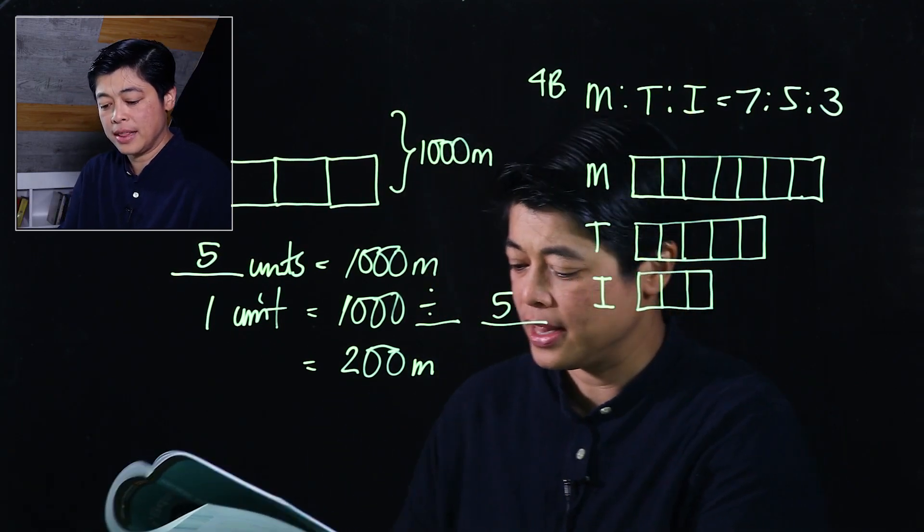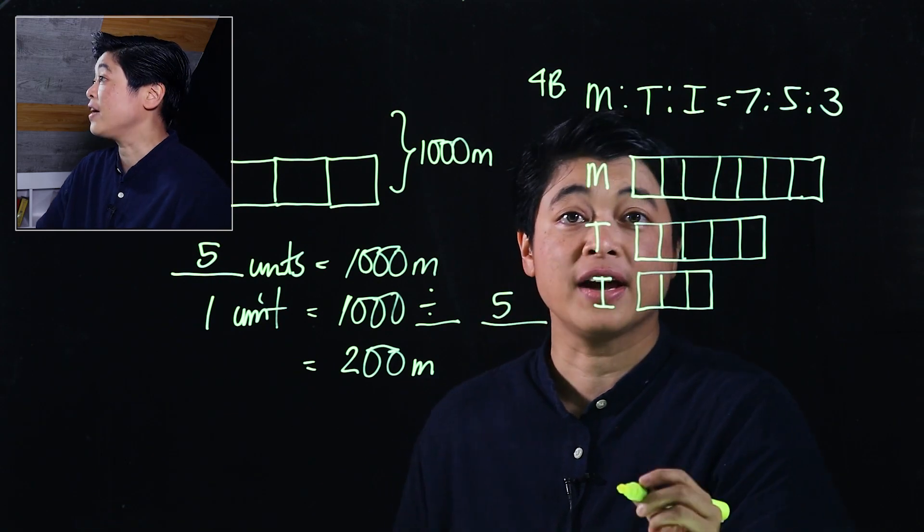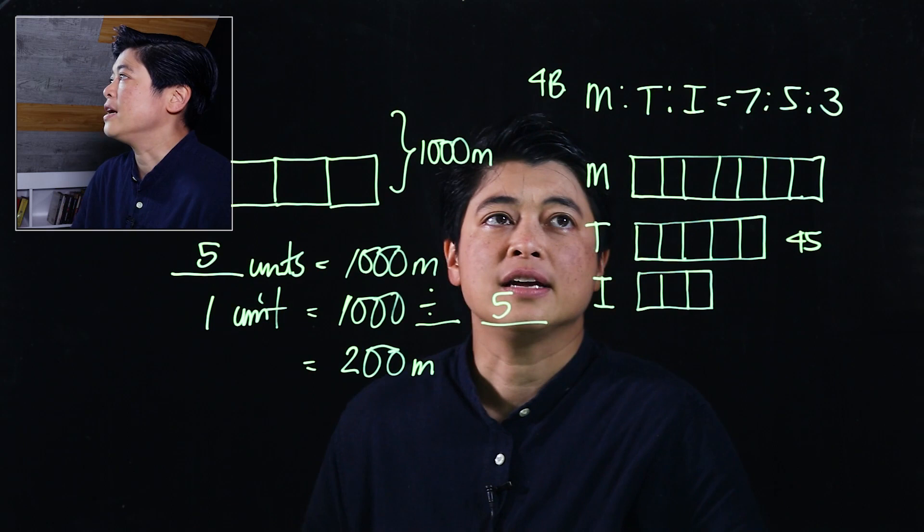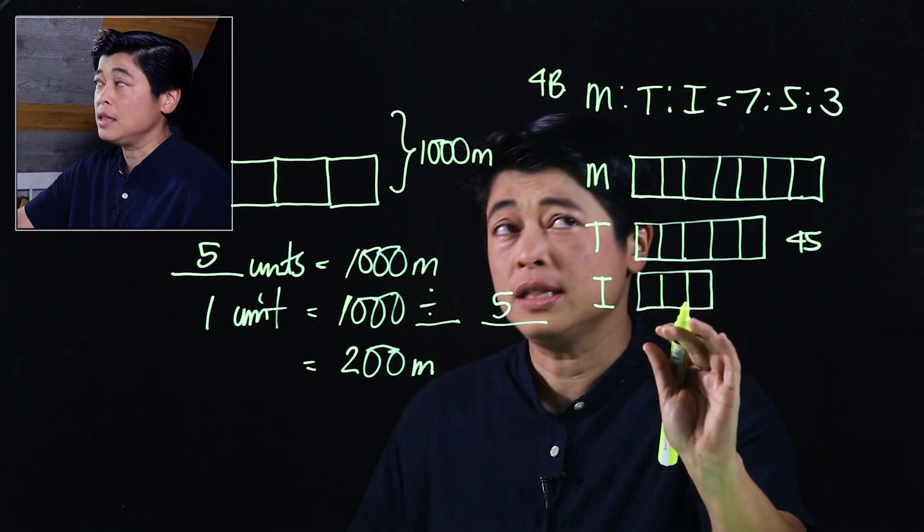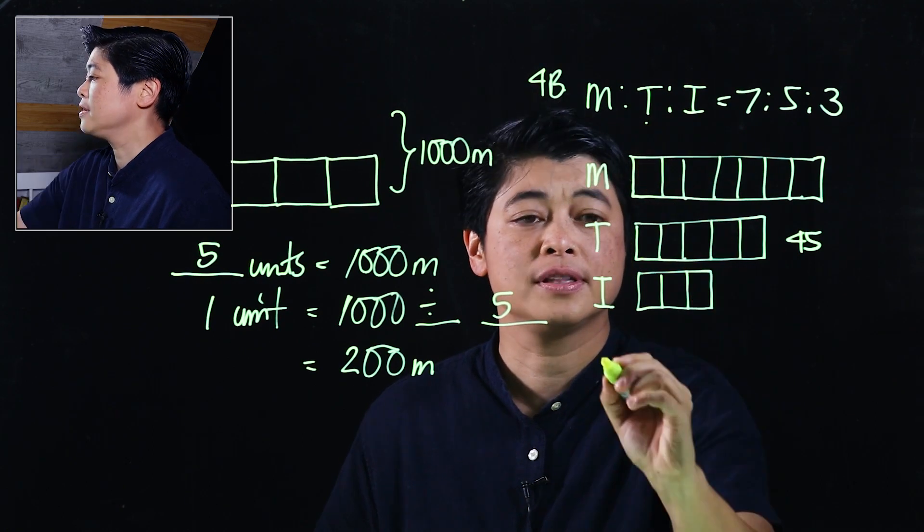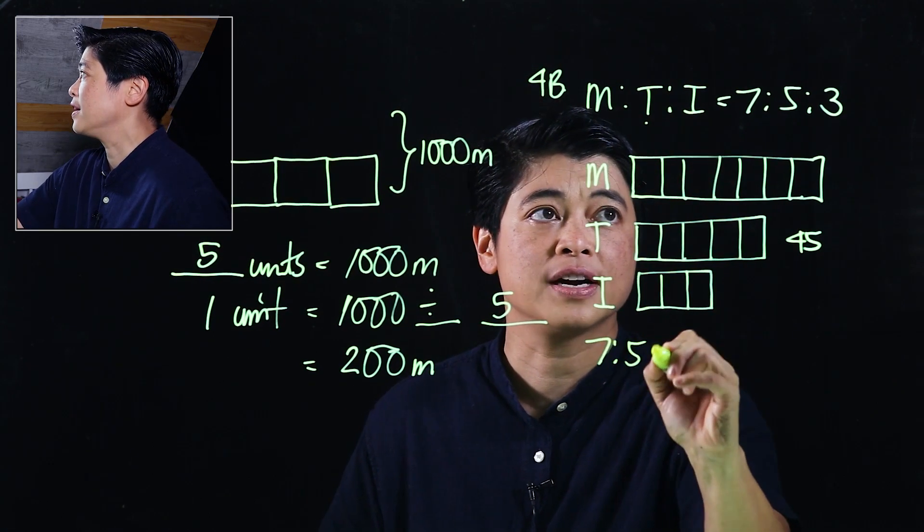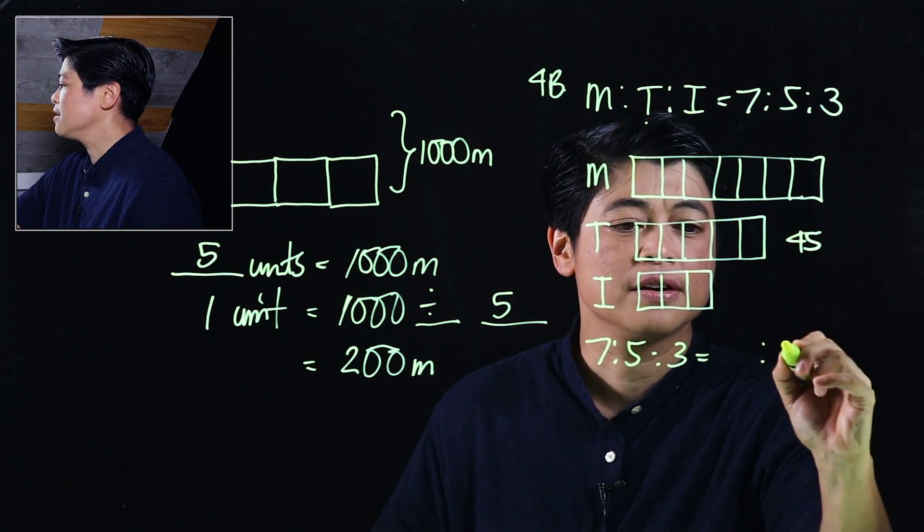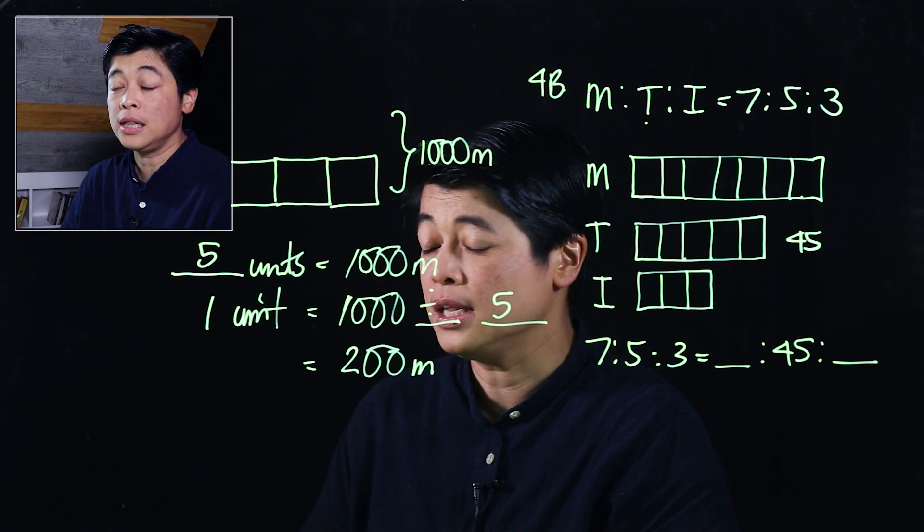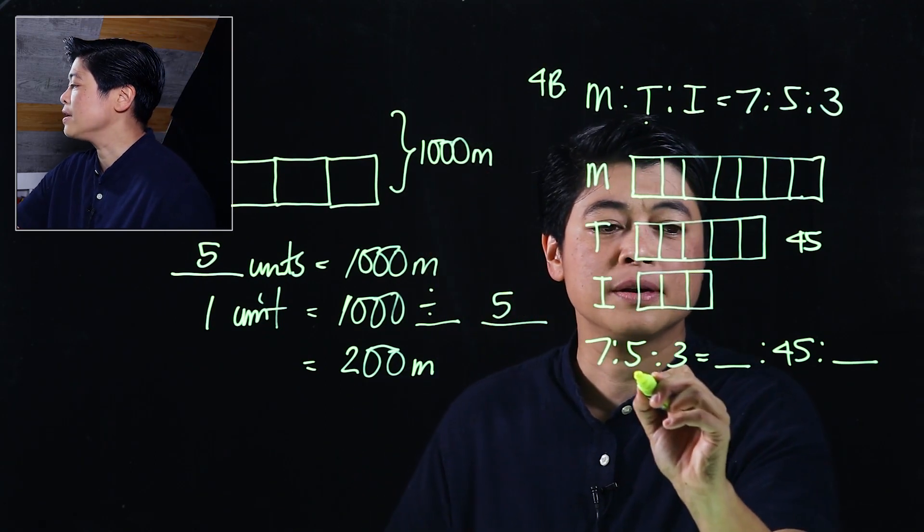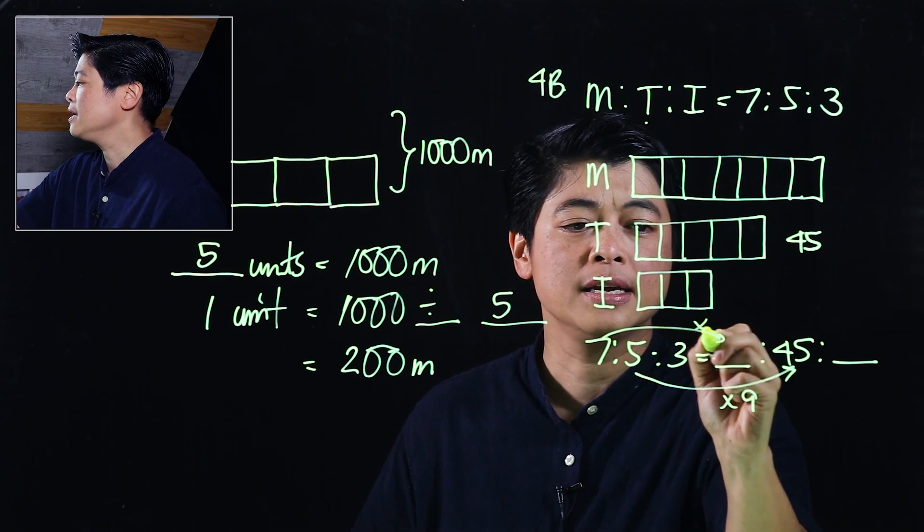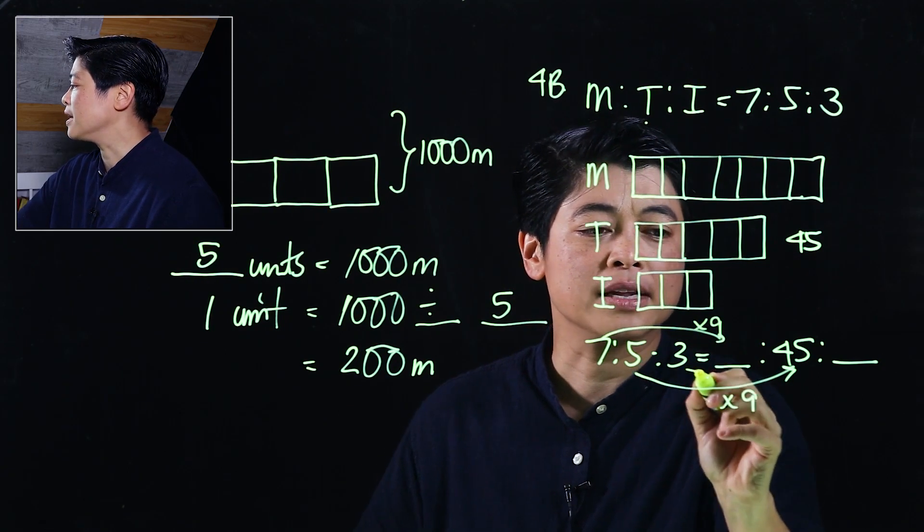Then it says there's 45 from Thailand, so this is 45. If I didn't do a bar model, I would have found since this is 45, this is 7 is to 5 is to 3, so this is 45. Without the bar model, this would have been a times 9, which means this would have been a times 9, and that would have also been a times 9.